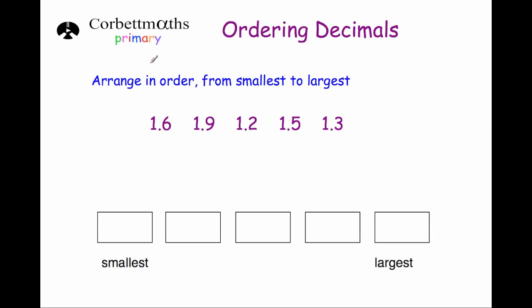Hi and welcome to this CorporateMath's primary video on ordering decimals. Here we've got a question that says arrange in order from smallest to largest: 1.6, 1.9, 1.2, 1.5 and 1.3.